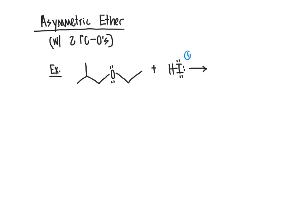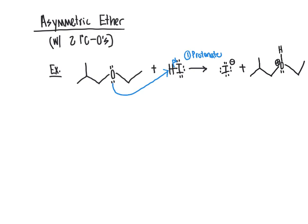Just like in the first example, the first step is protonation: the oxygen atom of the ether comes over and grabs the proton from HI, forcing the H-I bond to break. Iodine is a great nucleophile, which is one reason we're using HI as the acid of choice here. The product is now carrying an extra proton on the oxygen with a positive formal charge.